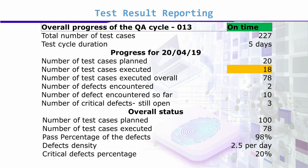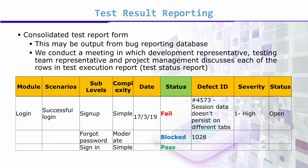These are two overall reports. If we further drill down, we get a consolidated test report — this is the combined report of all test engineers. It includes columns for module, scenario, sub-level, complexity, date, status, defect ID, severity, pass/fail status, and status of the bug. This may be output from a bug reporting database.